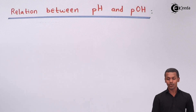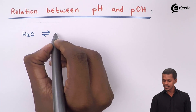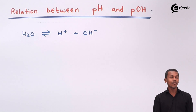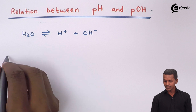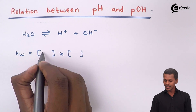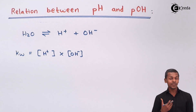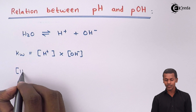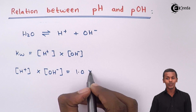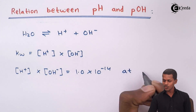For the ionic product of water, whenever water gets dissociated, that dissociation gives H⁺ ions along with OH⁻ ions. If we apply the law of mass action, we get that KW is nothing but the product of H⁺ ion concentration and OH⁻ ion concentration. It has also been found that this product is 1.0 × 10⁻¹⁴ at a particular temperature, that is 298 Kelvin.